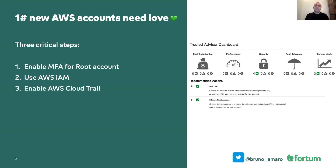One is to enable multi-factor authentication on the root account. The root account is the most privileged account you have — you can do pretty much anything with it without restrictions, so please make sure to enable MFA. This is something people often forget, especially in sandbox-type accounts. The second is to use AWS Identity and Access Management: instead of using the root account for day-to-day operations, start using IAM immediately. You can create a user for yourself and assign a policy that allows you to do the operations you want, managing things in a more effective way.